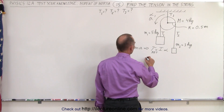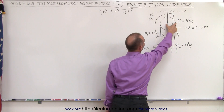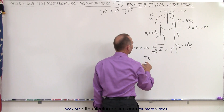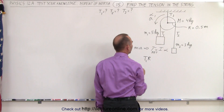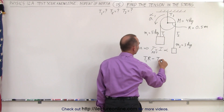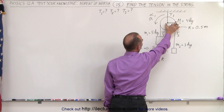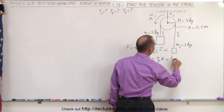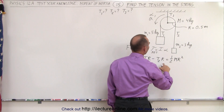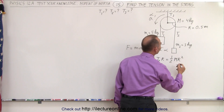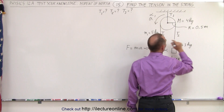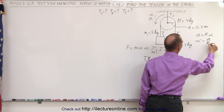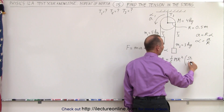The torque is force times the perpendicular distance from the line of action of the force to the pivot point — that would be the radius. T1 is the tension in the string on which m1 is suspended. We subtract from that T2 times r. The moment of inertia of a solid disk is one-half the mass times the radius squared, multiplied by the angular acceleration. The angular acceleration is related to the linear acceleration as: a = r·alpha, so alpha = a/r.